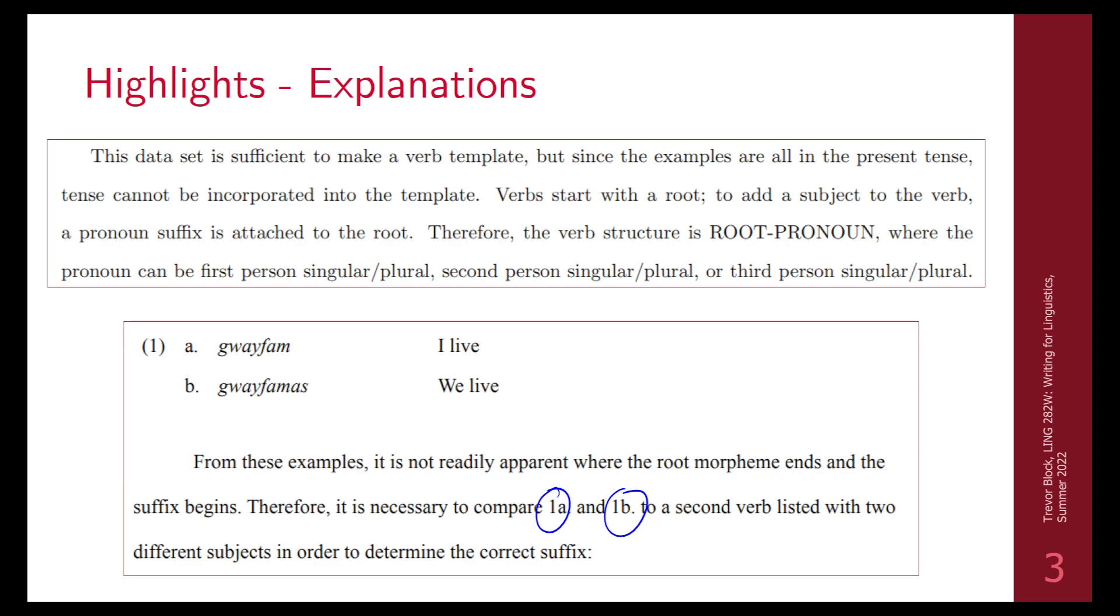Here are some highlights of explanations. I like the first one a lot because it's just very clear. In the second one, I like this comparison of examples because it's two minimal pairs. What I like about this is that in the writing, it poses the problem. It says it's not readily apparent where the root morpheme ends and the suffix begins using this method. So it points out the problem and then it gives an explanation as to what has to be done.